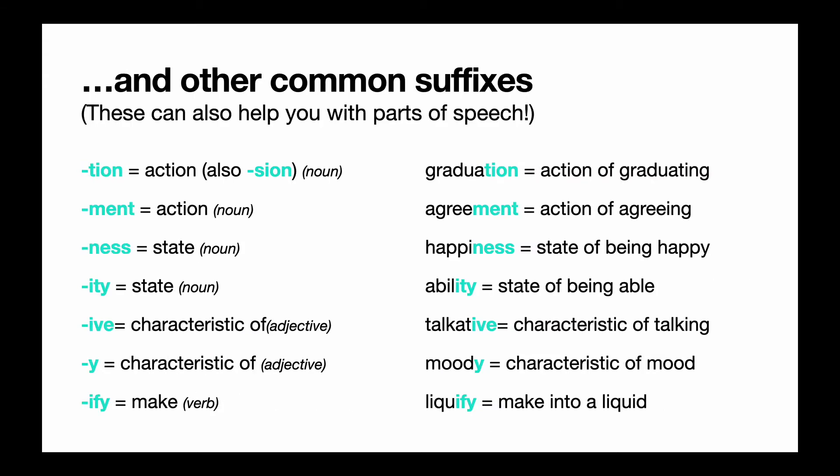This is just a small list. And here are some other common suffixes. '-tion' or '-sion' is an action, so graduation is the action of graduating. '-ment' is also an action — agreement, the action of agreeing. '-ness' and '-ity' are states. So happiness is the state of being happy, and ability is the state of being able. '-ive' means characteristic of — related to or strongly suggestive of something.